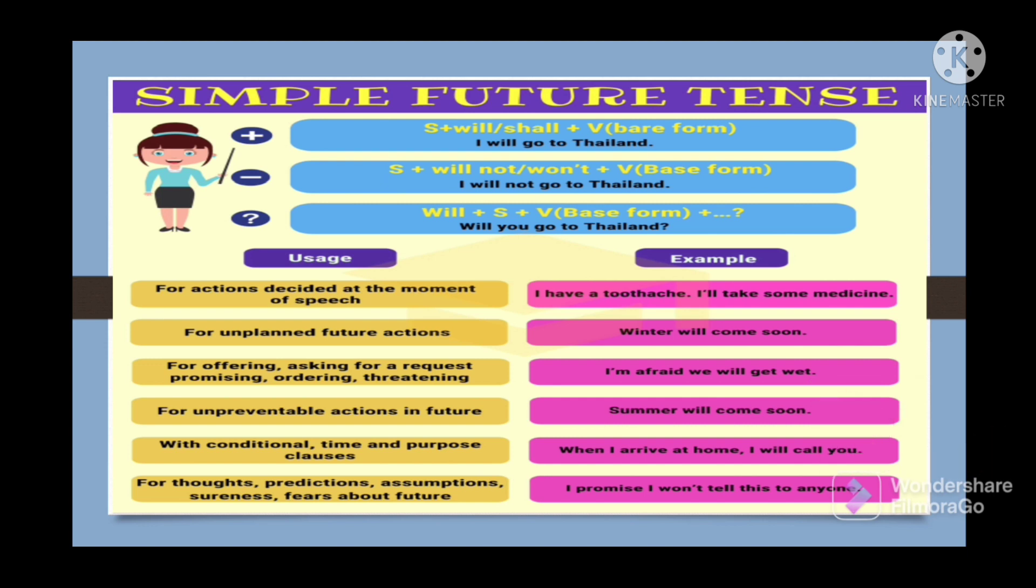Next, with unconditional time and purpose clauses, like examples here: When I arrive at home, I will call you. Next, for thoughts, predictions, assumptions, surenesses, fears about future, like if I take: I promise I won't tell this to anyone. So you are sure that you won't tell this to anyone. For that also we use simple future tense.